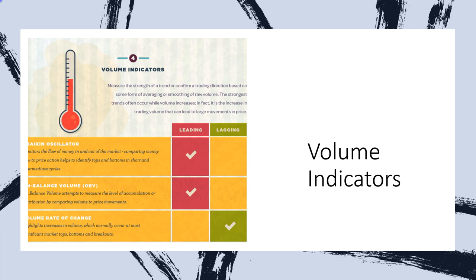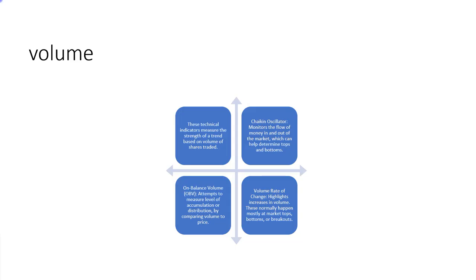Volume is your confirmation tool — it measures the strength of a trend and confirms a trading decision based on smoothing of raw volume. The strongest trends occur when volume increases; in fact it is the increase in trading volume that can lead to large price movements. Indicators like the Chaikin Oscillator, On Balance Volume, and Volume Rate of Change measure the strength of a trend based on the volume of assets, shares, or contracts being traded.